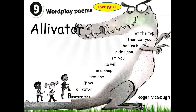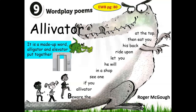Open your English workbook to page number 80. It's a wordplay poem. Roger McGuff is the poet of this poem. Look at this word: Elevator. Actually, it is made up of two words — alligator and elevator — put together. You know what an elevator is? Elevator is a thing that lifts you up, that takes you up. So it is a made-up word: alligator and elevator put together.